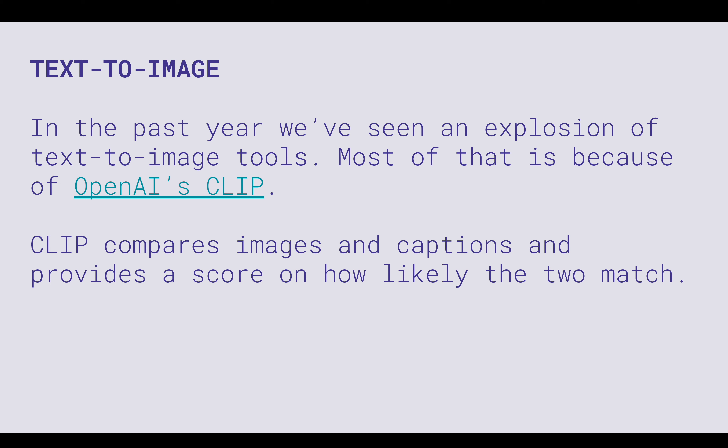It's only been about a year since Ryan Murdoch put out his first CLIP notebook, so only in the past year have we really seen this explosion in text-to-image tools. That's mostly because of a model called OpenAI CLIP. CLIP stands for something like Contrastive Learning — I forget exactly what it stands for. Essentially, what CLIP does is compare an image to a caption and provide a score on how likely the two are to match.